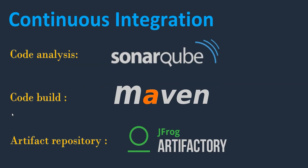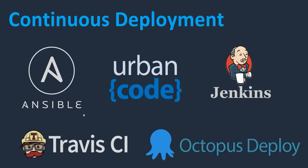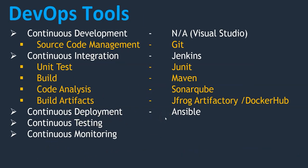For code analysis, we are going to use SonarQube. For code build, Maven. For artifact repository, JFrog Artifactory. Under continuous integration, apart from Jenkins, we cover JUnit for unit testing, Maven as build tool, SonarQube for code analysis, and JFrog Artifactory as well as Docker Hub for build artifacts — since we are dealing with containers, we need Docker Hub. Under continuous deployment, among tools like Ansible, Urban Code Deploy, Jenkins, Travis CI, and Octopus Deploy, we are going to use Ansible.